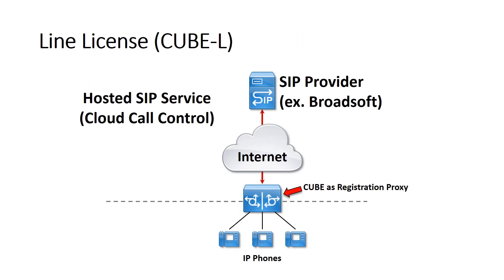Line licenses are mainly for use with hosted or cloud SIP communication services, such as BroadSoft or similar IP-centric solutions. You can also call this a registration proxy, and if you want your endpoints registered to somewhere on the cloud via proxy, this is the license you must consider. Some of you may remember this license was previously available for the Cisco 800 series routers and called the NanoCube license. Now Cube LineSide client licenses are available for all platforms with Cube version 12.